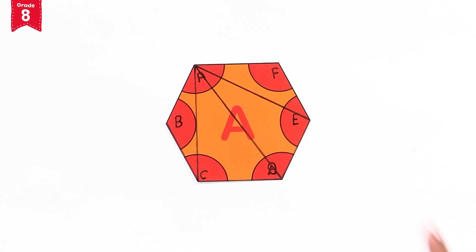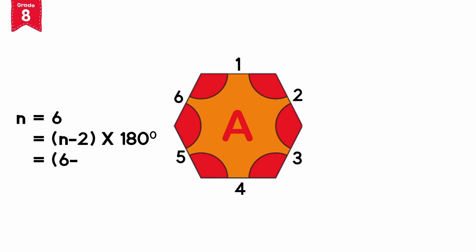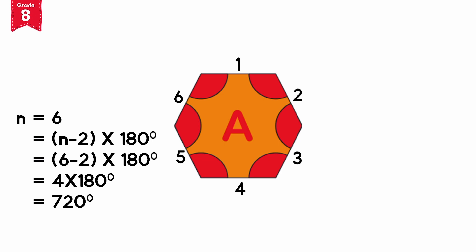Let's apply this formula for a hexagon. The number of sides in a hexagon is 6, so n equals 6. Using the formula (n − 2) × 180 degrees, we get (6 − 2) × 180 degrees, which equals 4 × 180 degrees, and that equals 720 degrees — the same result we obtained before. Now you can show this to your friends and help them in finding the sum of the interior angles of any polygon.